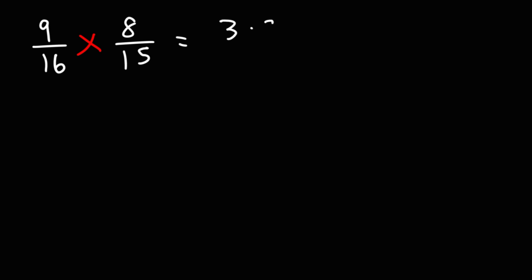So 9 is 3 times 3. 16 is, we can write that as 4 times 4. 8 is 4 times 2. 15 is 5 times 3. Now, this 4 right here, I'm going to break it down into 2 times 2. So by doing so, notice that I can cancel a 4. I could cancel a 2. And I can cancel a 3.